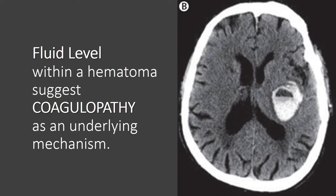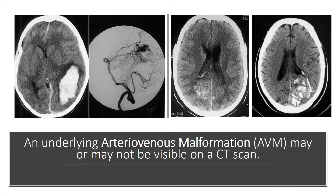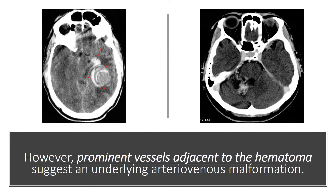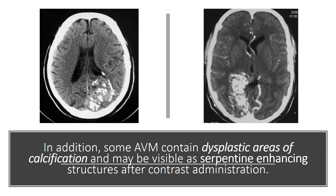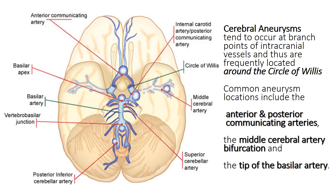A fluid level within a hematoma suggests coagulopathy as an underlying mechanism. An underlying arteriovenous malformation may or may not be visible on CT scan; however, prominent vessels adjacent to the hematoma suggest an underlying AVM. Some AVMs contain dysplastic areas of calcification and may be visible as serpentine-enhancing structures after contrast administration. In the absence of trauma, the most common cause of subarachnoid hemorrhage is a ruptured cerebral aneurysm. Cerebral aneurysms tend to occur at branch points of intracranial vessels and are frequently located around the circle of Willis. Common aneurysm locations include the anterior and posterior communicating arteries, the middle cerebral artery bifurcation, and the tip of the basilar artery.